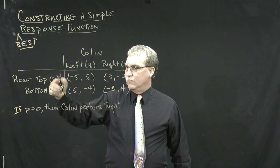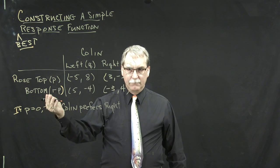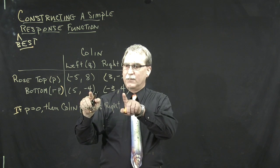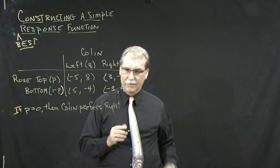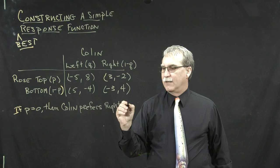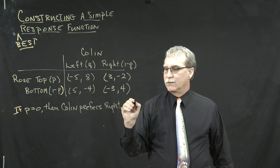If P is 0, then Rose is always in the bottom, and Colin prefers the payoff of 4 over the payoff of negative 4. That's why he prefers the right-hand column, which is equivalent to saying Q equals 0.